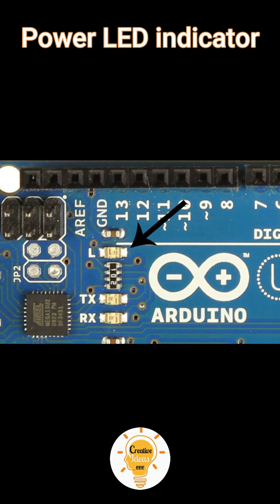Power LED Indicator: This LED should light up when you plug your Arduino into a power source, indicating that your board is powered up correctly. If this light does not turn on, then there is something wrong with the connection.